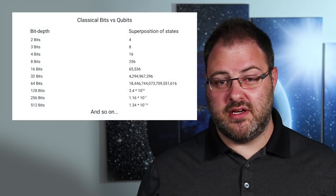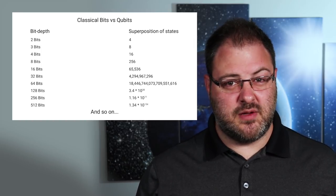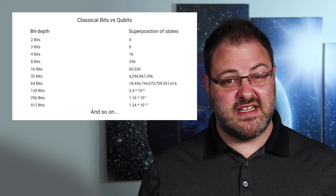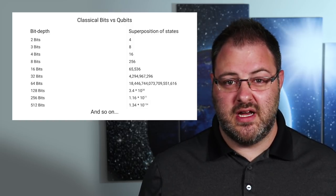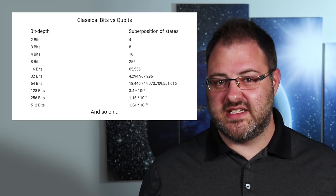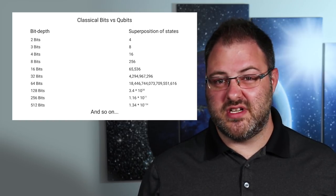This difference really starts to show when we start adding bits to the system. With a system of 2 bits, a quantum computer can be in a superposition of 4 states at the same time. With 3 bits, we're up to 8 different states. With 16 bits, we're now up to 65,536 different states that are superposed. And for a system of just 64 bits, we're now at almost 18.56 billion different states that are superposed — and that's just for a small 64-bit system. While the quantum computer grows exponentially in computational power, the classical computer continues to only represent a single one of those values at any one time.